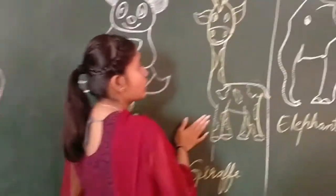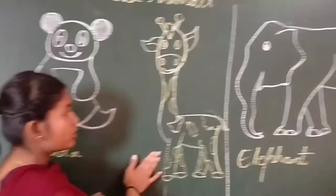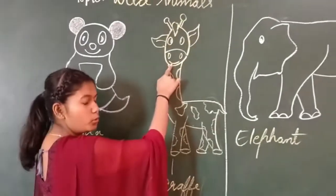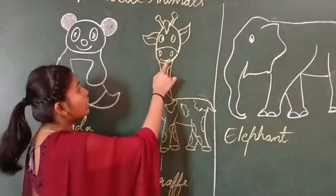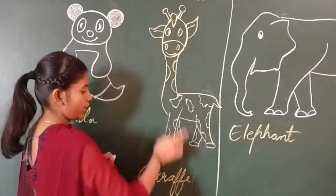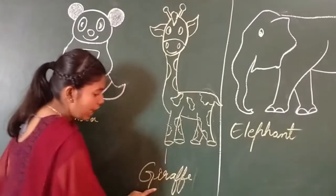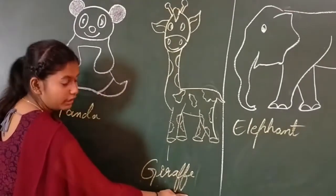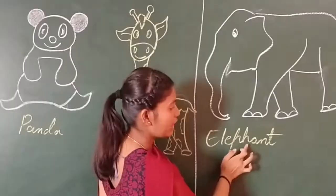So then, this is a giraffe. Giraffe has a blue-purple tongue and it has a very long neck. G-I-R-A-F-F-E, giraffe.